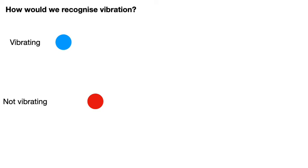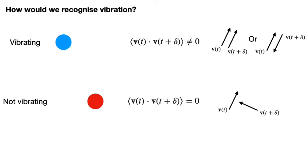We can probe whether or not the atom is still moving along the same direction at some initial time and some later time t plus delta by computing the dot product between the velocity of the atom at time t and the velocity of the atom at time t plus delta, as shown here. For the non-vibrating atom, we would expect this dot product to be close to zero, as the direction in which the atom is moving at time t is different from the direction of the velocity at time t plus delta, as shown in this diagram. For the blue atom, by contrast, that is vibrating, we would expect this dot product to be non-zero. In this case, the velocity at time t and the velocity at the later time, t plus delta, are parallel or anti-parallel, as shown in the figure. The dot product between these two velocities is thus large.